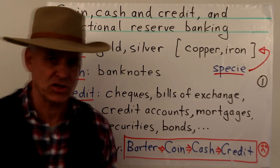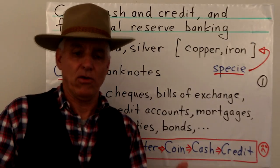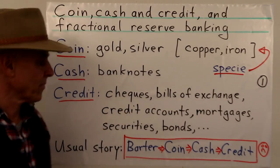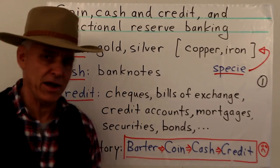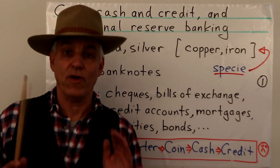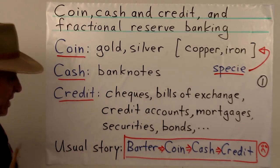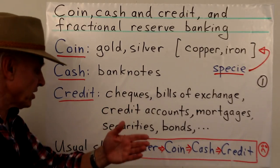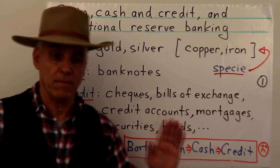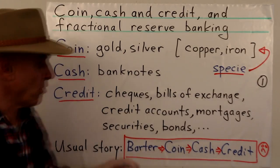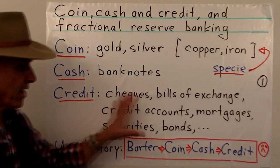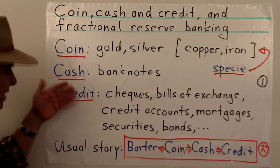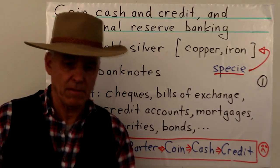Then we have cash, which is banknotes — and also small change, but mostly banknotes. And then we have the third category, which is a lot harder to get one's head around: credit, which consists of all kinds of things including checks, bills of exchange, credit accounts, mortgages, securities, bonds, and many others. This is a big can of worms trying to get our head around credit. Nevertheless, broadly, these are three major aspects of money.